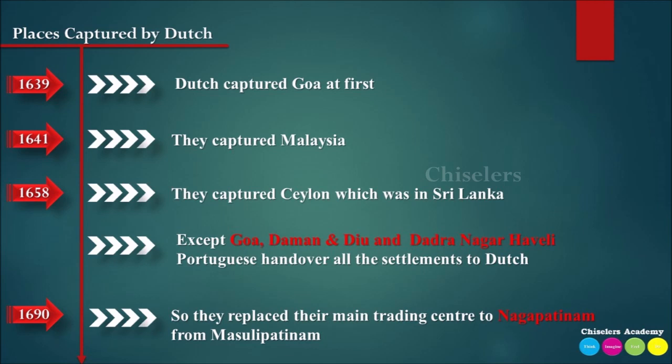The Portuguese settlements captured by the Dutch included Goa, Daman, Diu, Dadra, and Nagar Haveli. Around 1690, Pulicat became the main trading center and headquarters for the Dutch in India.